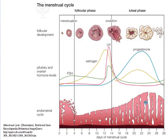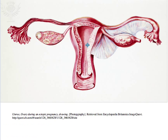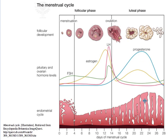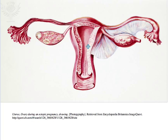If fertilization does occur, the progesterone produced by the corpus luteum gives sufficient time for the zygote to implant itself in the uterus. Once this occurs, the hormone HCG (human chorionic gonadotropin) stimulates the corpus luteum to extend its lifespan and continue producing progesterone, keeping the endometrial lining in place. Eventually the placenta develops and takes over the role of producing progesterone to maintain the lining until the end of gestation, after which other hormonal changes signal the uterine contractions associated with birth.